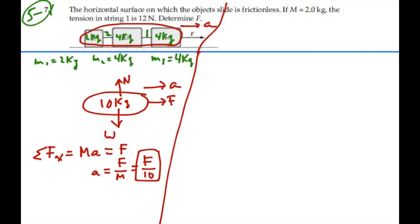Again, we want to utilize the fact that the tension 1 is equal to 12 newtons. To do that, let's do another free body diagram. Let's focus in on blobbing the first two masses together and do a free body diagram of that.